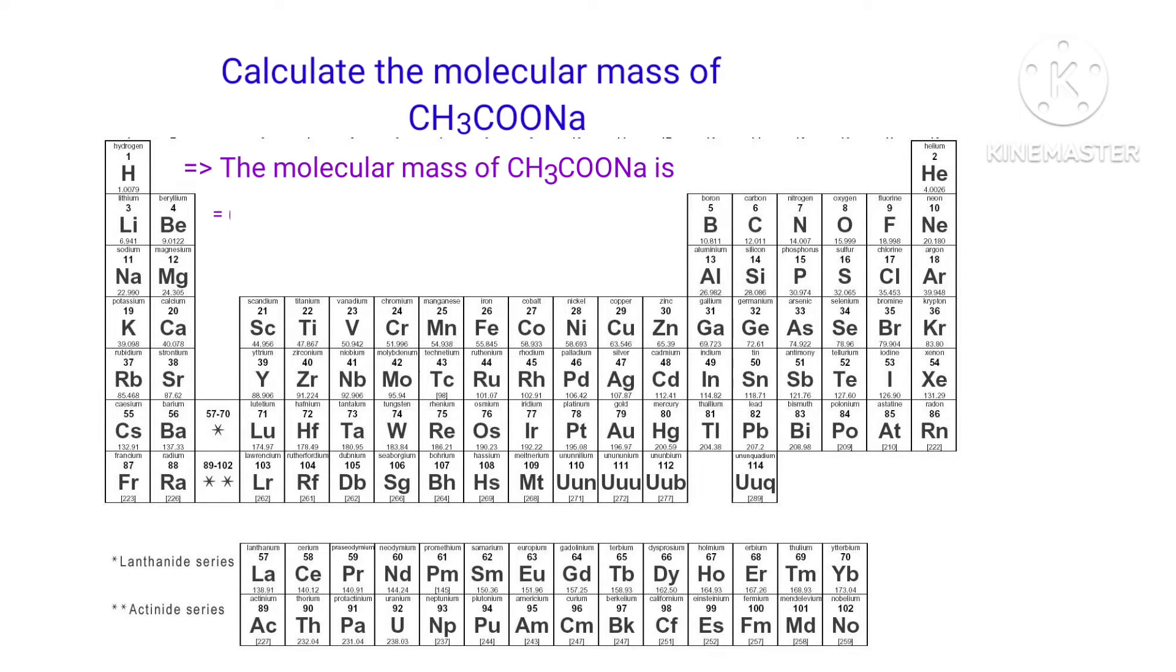Therefore, the Molecular Mass of CH3COONa is 12.011 times 2 plus 1.0079 times 3 plus 15.999 times 2 plus 22.990 times 1. That equals 82.0337 grams per mole.